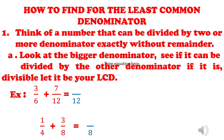How do we find the least common denominator? Since this is a common problem for pupils, I will introduce a shortcut way. Think of a number that can be divided by two or more denominators exactly without a remainder. Letter A: look at the bigger denominator and see if it can be divided by the other denominator. If it is, then let it be your LCD.